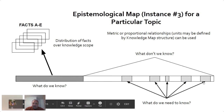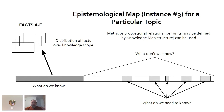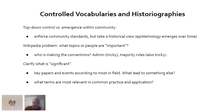We can include events that were previously obscured or found through experiment or research, then build a distribution of those facts — not just quantitatively, but in terms of historiography — to build a better knowledge map of the field. For educational purposes, we need to think about top-down control and emergence within a community: enforcing community standards while allowing people to build a knowledge base over time, without being too heavy-handed or allowing proposals that aren't critical to the learning experience.